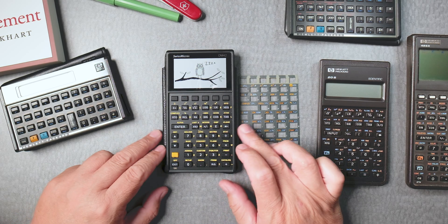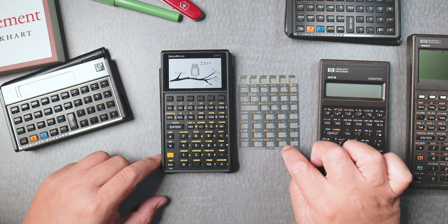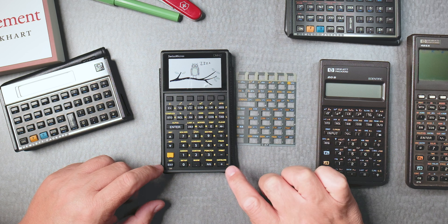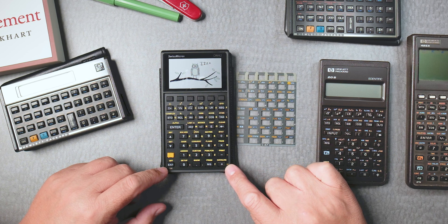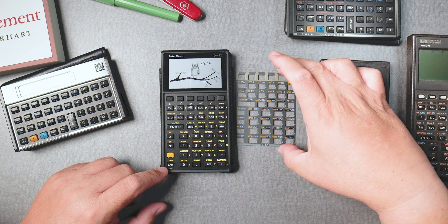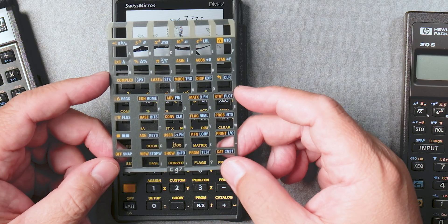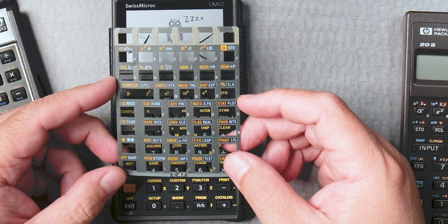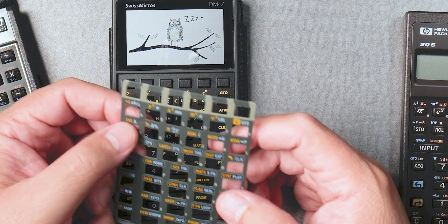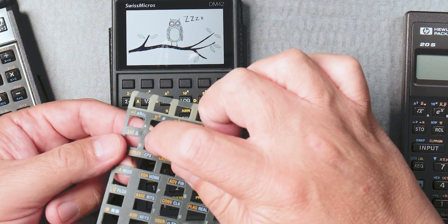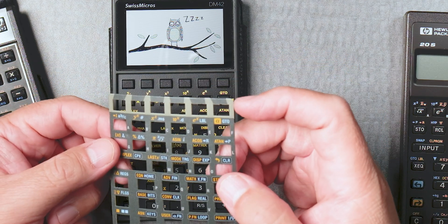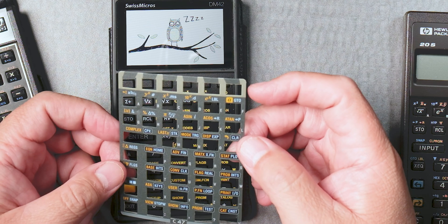Okay, so this video is about the C47 bezel that goes on top of the Swiss Micro DM42. I got this recently at the C47 website. There's a little dent here, but that's fine. Other than that, it's really nice.